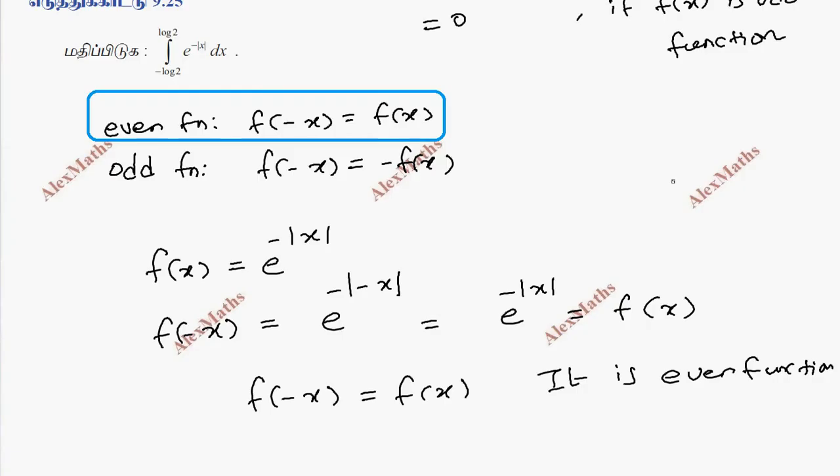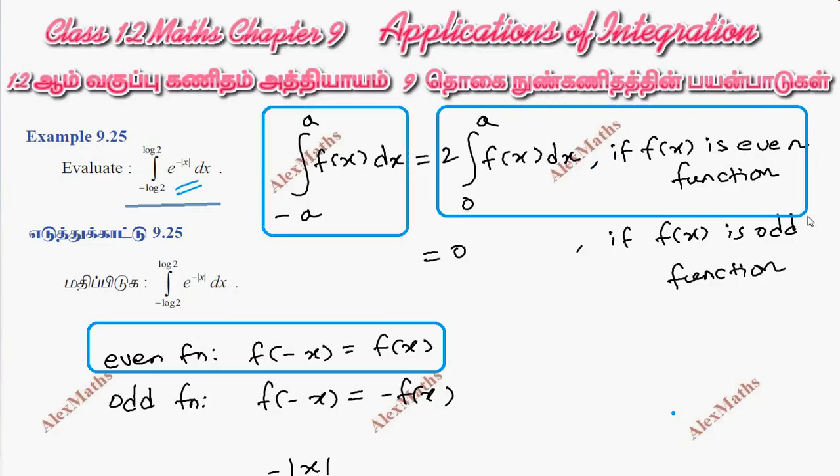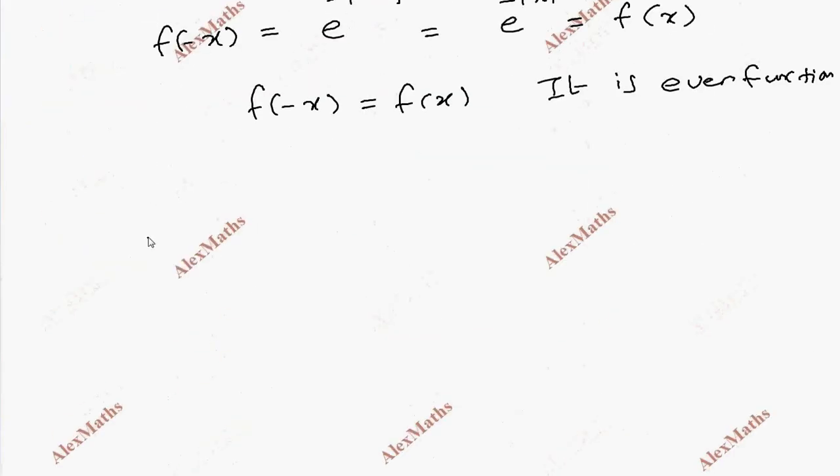Since it's an even function, we use the property. The integral is 2 times the integral from 0 to the upper limit. We will rewrite the original: integral from minus log 2 to plus log 2 of e power minus mod x dx equals 2 times integral from 0 to log 2 of e power minus x dx.